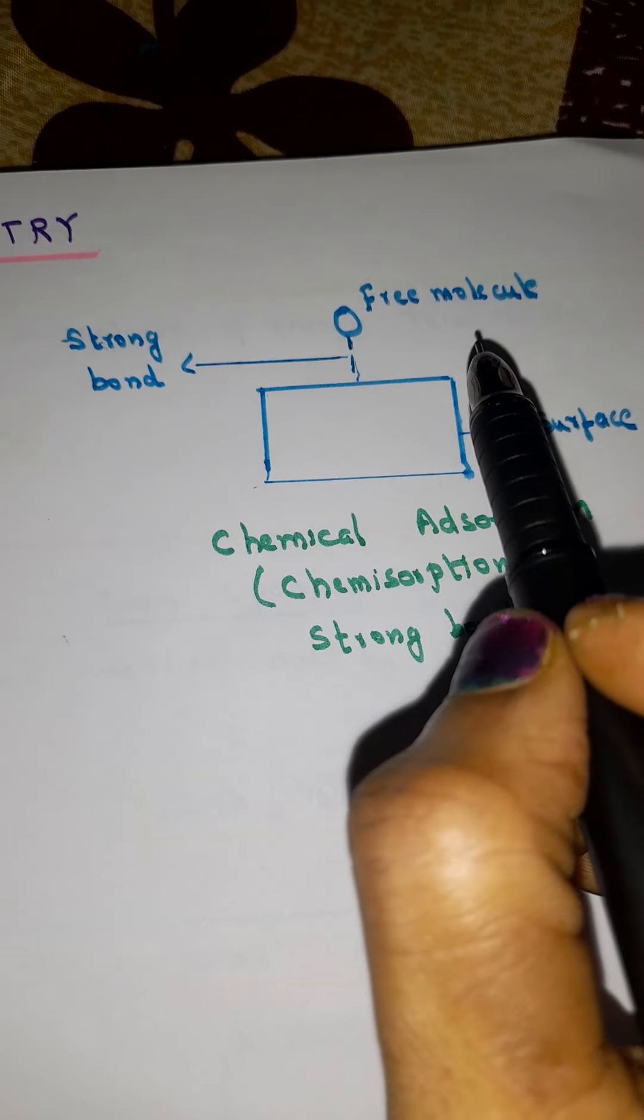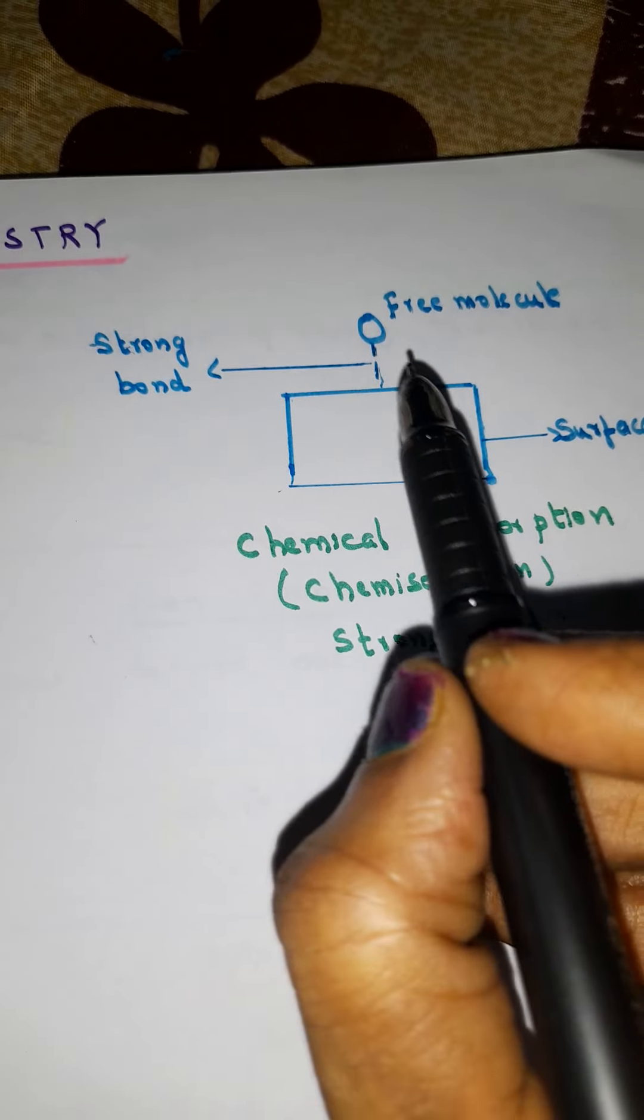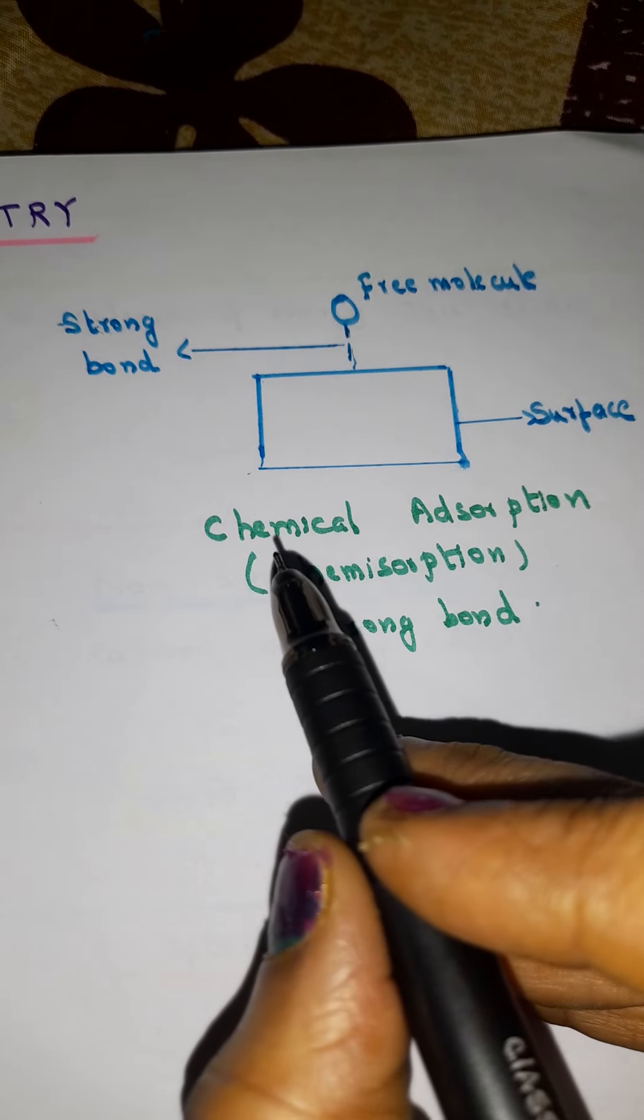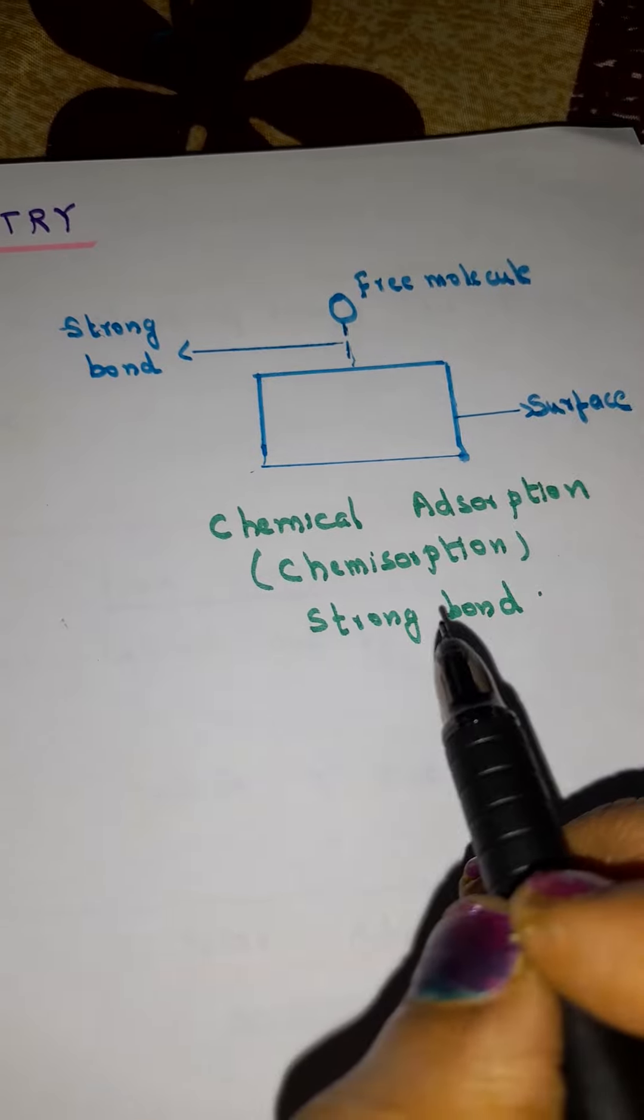Now suppose you can see another case where a free molecule is coming to the surface and the bond between them is a strong one. In that case we call it chemical adsorption or chemisorption. So in this case it is a very strong bond.